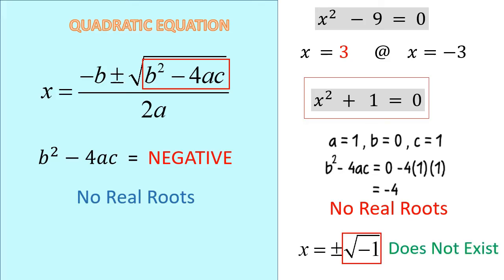It's easy. As the square root of negative 1 does not exist, it means that there are no solutions for the equation x² + 1 = 0.